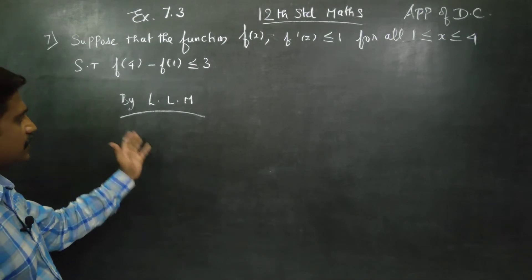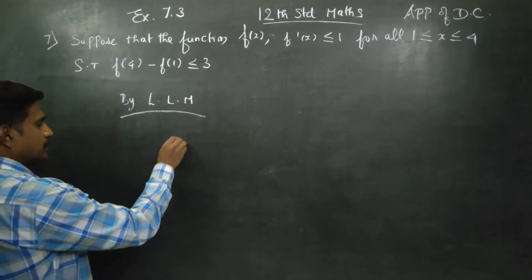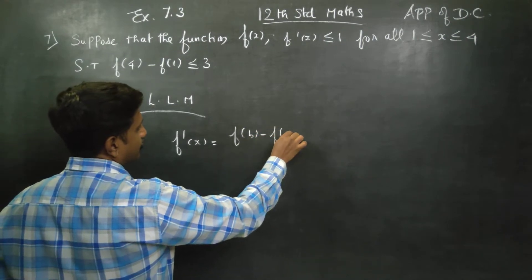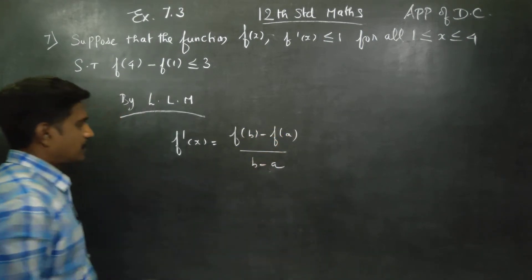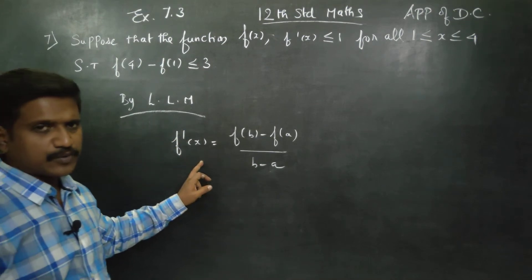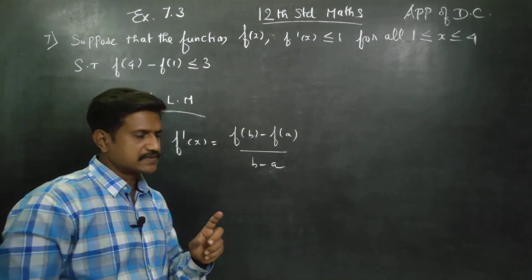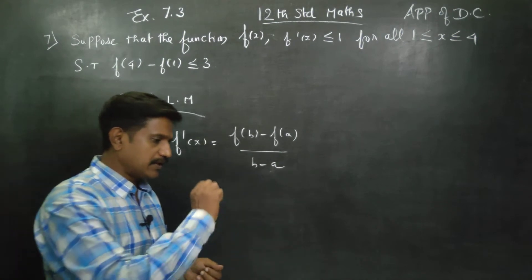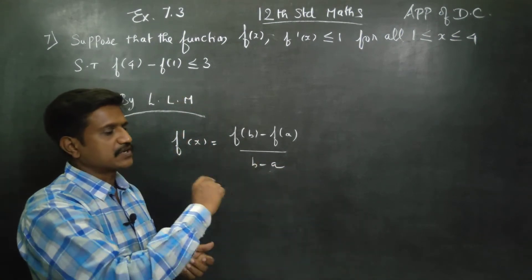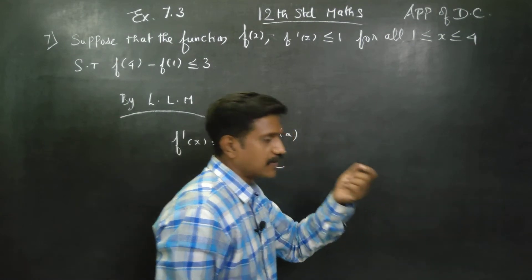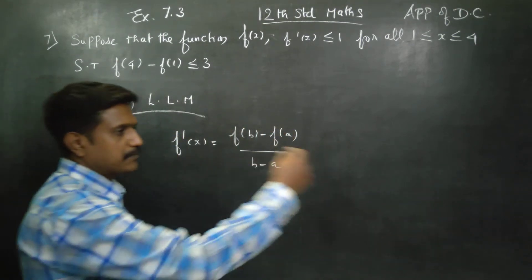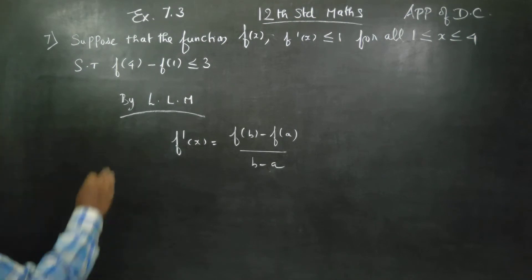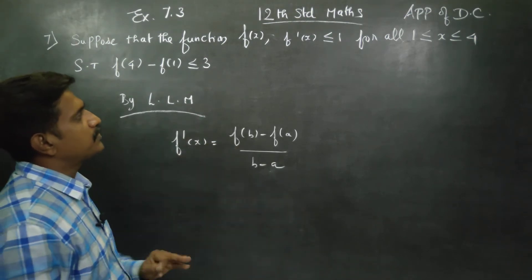By Lagrange's mean value theorem, also called Lagrange's law of mean, we can state that f'(c) is equal to f(b) minus f(a) divided by b minus a. Here, f'(c) is a point between two intervals. The value of x is equal to f(b) minus f(a) divided by b minus a.